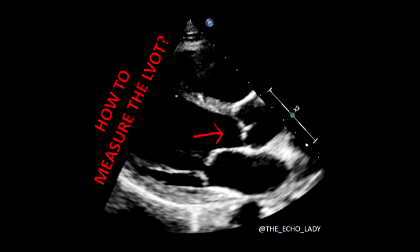This dimension is squared in the continuity equation, which means that if we make even a small error in the measurement of the LVOT, it's going to have a big impact on the calculated area.